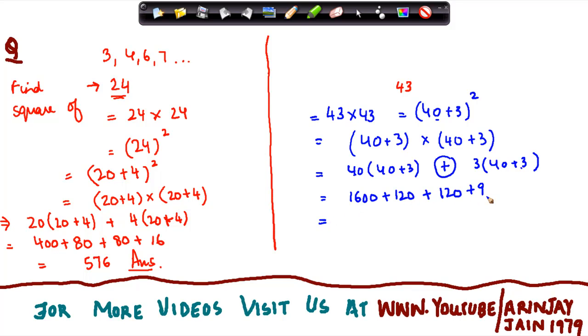I do the addition of all these four numbers. What do I get? 1849, and that's the square of this number. So without actual multiplication I was able to find out the square of these numbers.